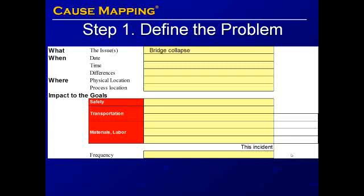We capture the issue — in this case a bridge collapse — the date, November 7, 1940, the time, approximately 10 o'clock a.m., and any differences. The bridge was extremely narrow relative to its length, and it was a very windy day. We also capture the physical location, in this case Tacoma, Washington, and the process location. The bridge spanned Puget Sound.